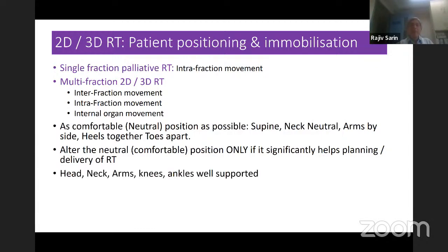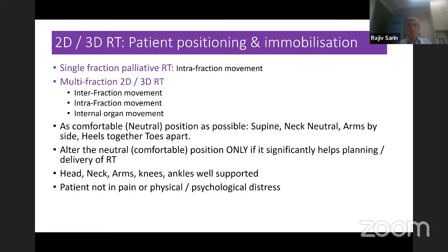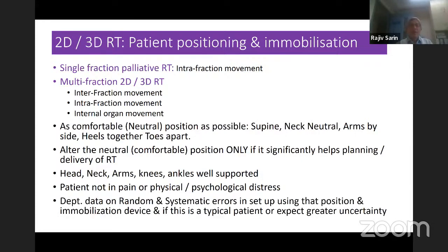The head, neck, arms, knees, and ankles should be well supported using various supporting devices. Most importantly, the patient should not be in pain or physical or psychological distress — otherwise you will have more intrafraction and interfraction movement. You should have departmental data on random and systematic setup errors with that kind of immobilization device, and whether the patient you are planning is a typical patient or you expect greater uncertainty.